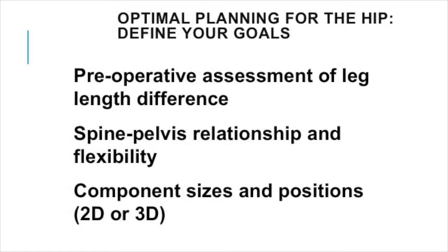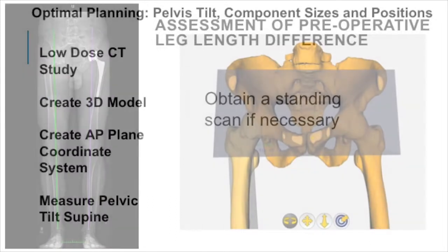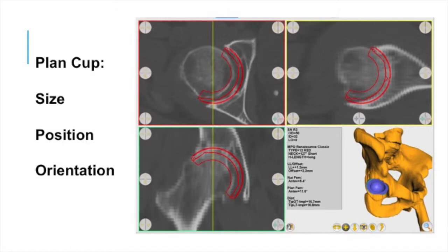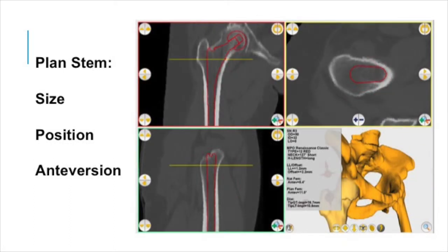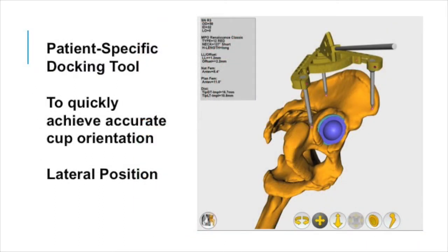In terms of the hip, the things I do preoperatively are: assess the leg length difference, look at the spine-pelvis relationship in a few different ways, and plan the surgery in detail in 2D and 3D. If there's a big question about leg length, I would routinely get a scanogram. We do CT-based planning on a routine basis — create 3D models, set coordinate systems, and plan component sizing for the socket and the femur. We address the femoral anteversion issue, the whole team knows the implant sizes, and we can plan our leg length change and offset change very precisely in advance, then use smart tools to accomplish cup alignment and leg length change.